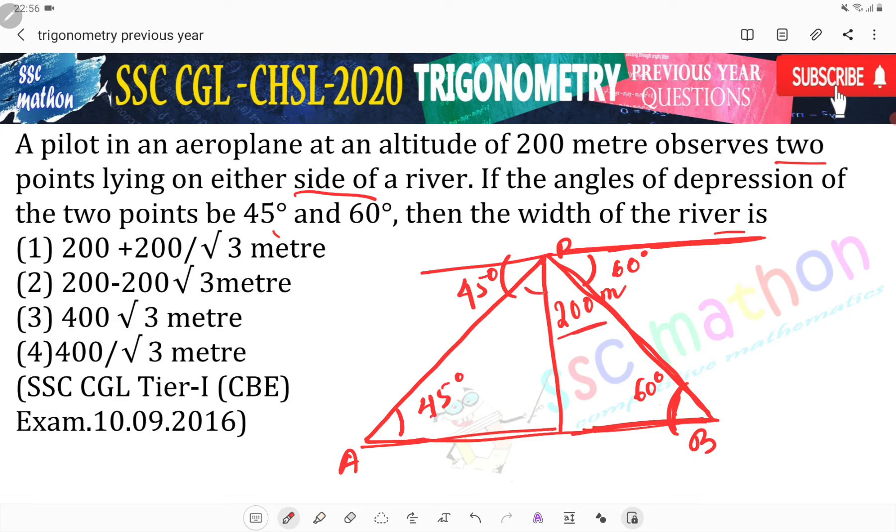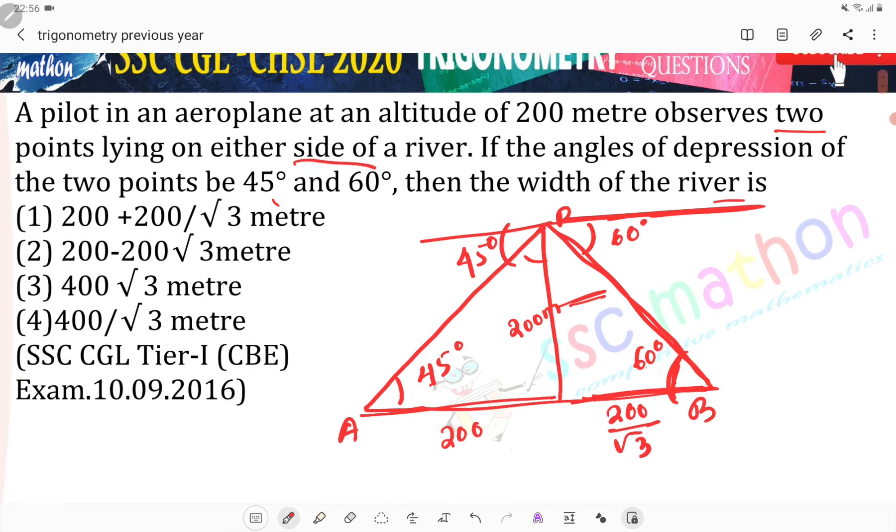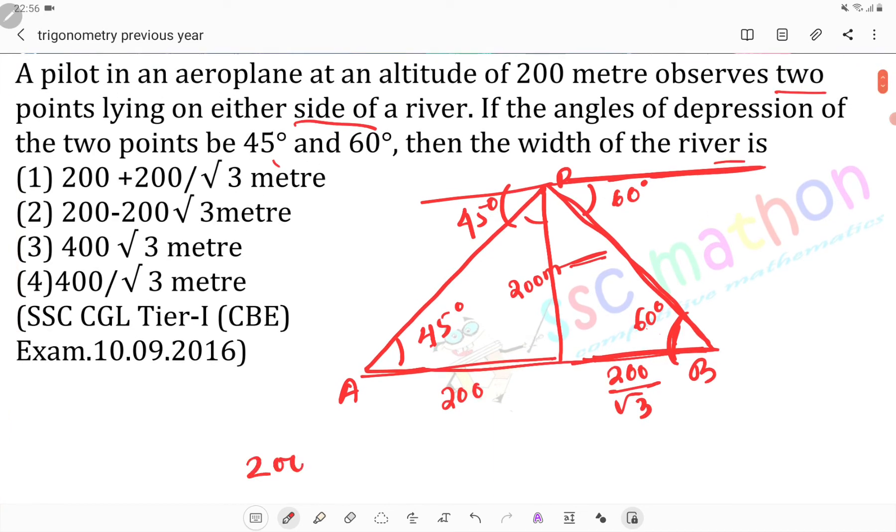Sir, we know that in a 45-45 triangle, if this is 200, then this is also 200. Okay? Now opposite to 60 is this 200 meter. So opposite to 30 what will it be? That divided by root 3. So total length will be? This much. 200 plus 200 by root 3.